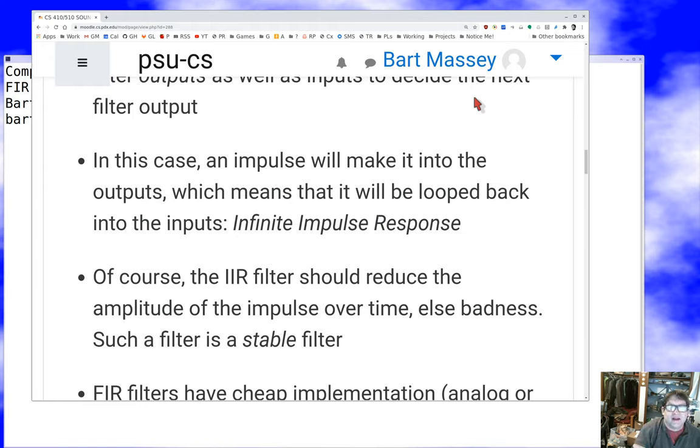That impulse will appear on the output where it will be looped back into the input and appear on the output again. It's going to keep cycling around. Over time, hopefully each time it goes through the cycle the impulse will be a little smaller. We want the impulse to decay or else the filter is unstable and will make a horrible mess.